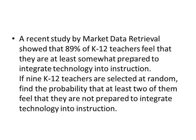Let's try another one. A recent study showed that 89% of teachers feel that they are somewhat prepared to integrate technology into instruction. If nine teachers are selected at random, find the probability that at least two feel they are not prepared to integrate technology. n is nine, and x here, at least two, greater than or equal to two. But the 89% is not p, because we're counting the number that are not prepared to integrate technology, but the 89% say that they are somewhat prepared. So one minus 0.89 or 0.11 is the value we use for p.